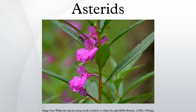Most of the taxa belonging to this clade had been referred to the Asteroidae in the Cronquist system and to the Sympetalae in earlier systems. The name Asterids resembles the earlier botanical name but is intended to be the name of a clade rather than a formal ranked name in the sense of the ICBN. This clade is one of the two most speciose groups of eudicots, the other being the Rosids.